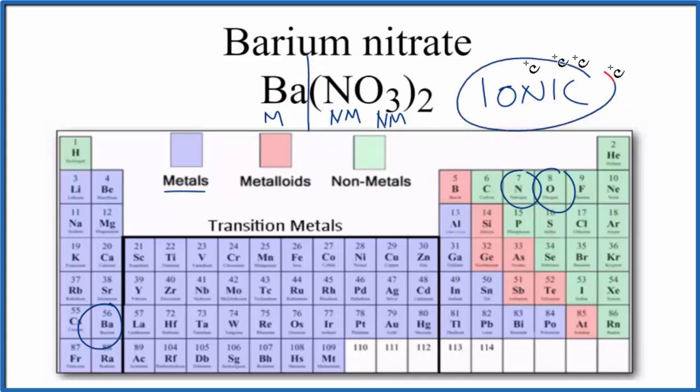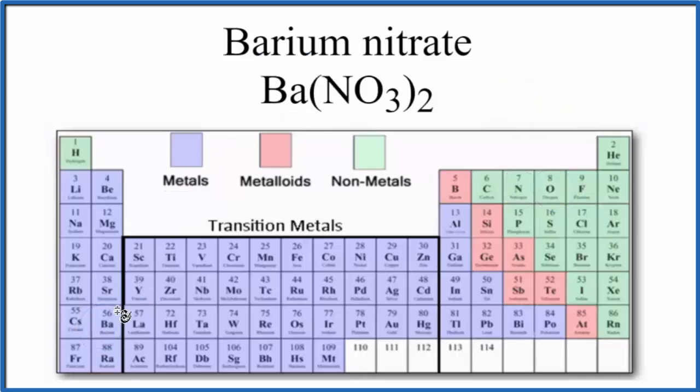So when we have ionic compounds, we do need to talk about charge. So barium on the periodic table is in group 2. That means it'll have a 2 plus ionic charge.